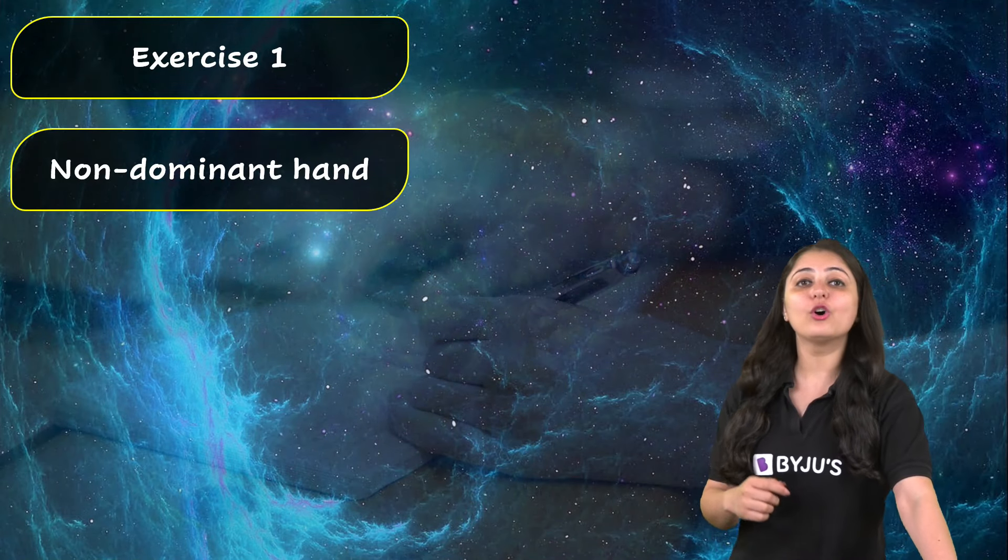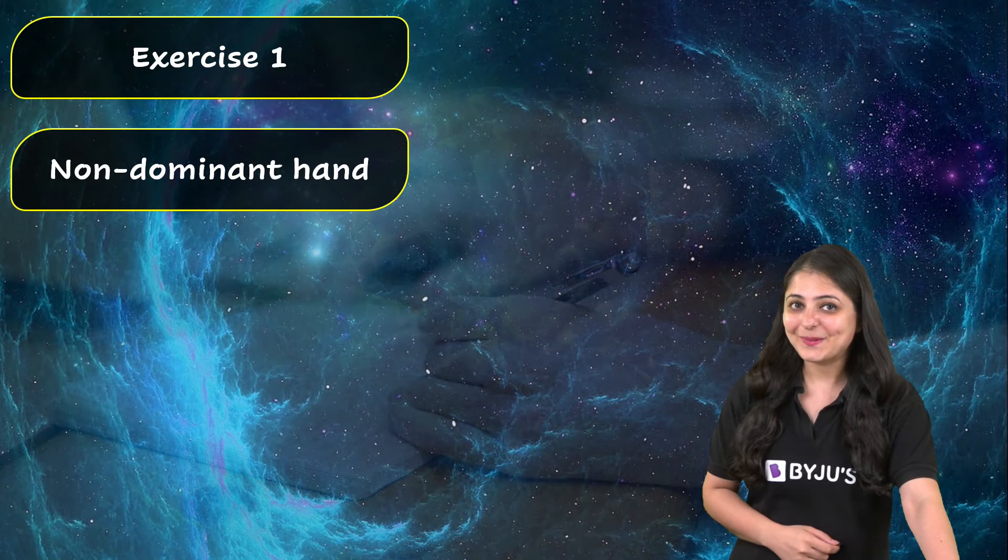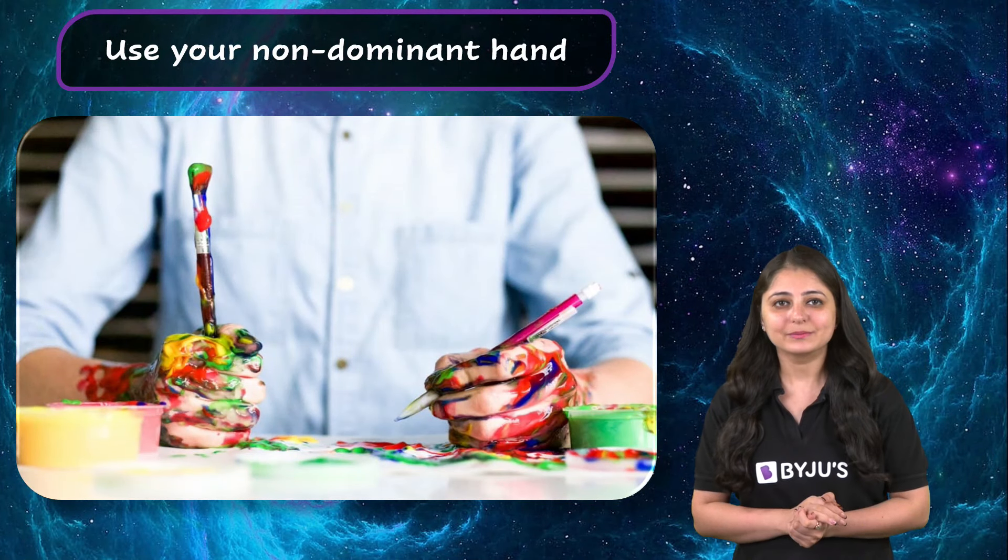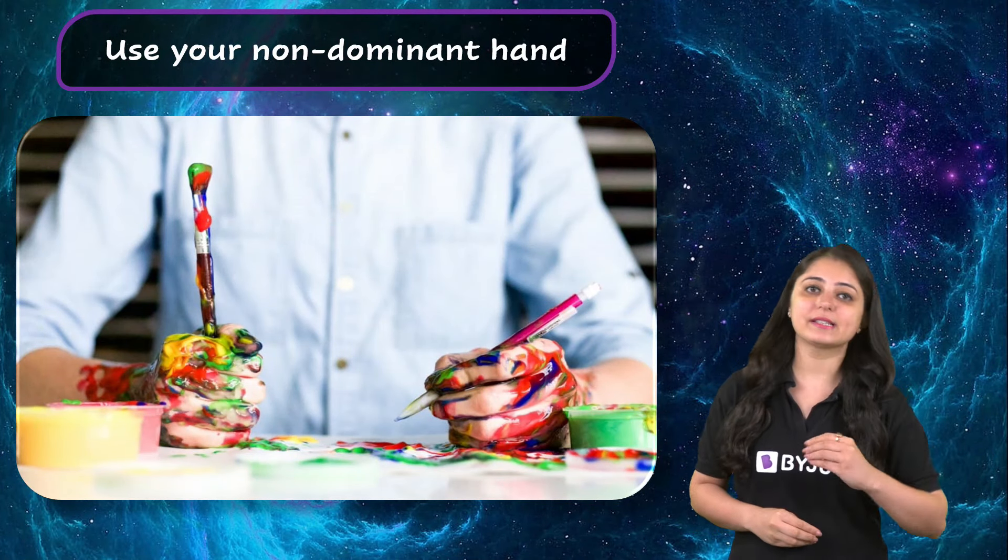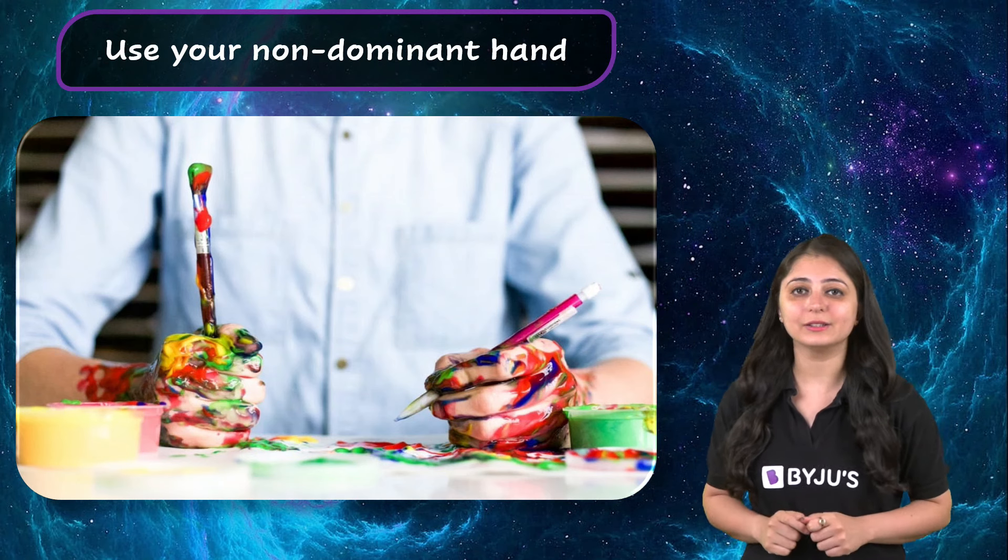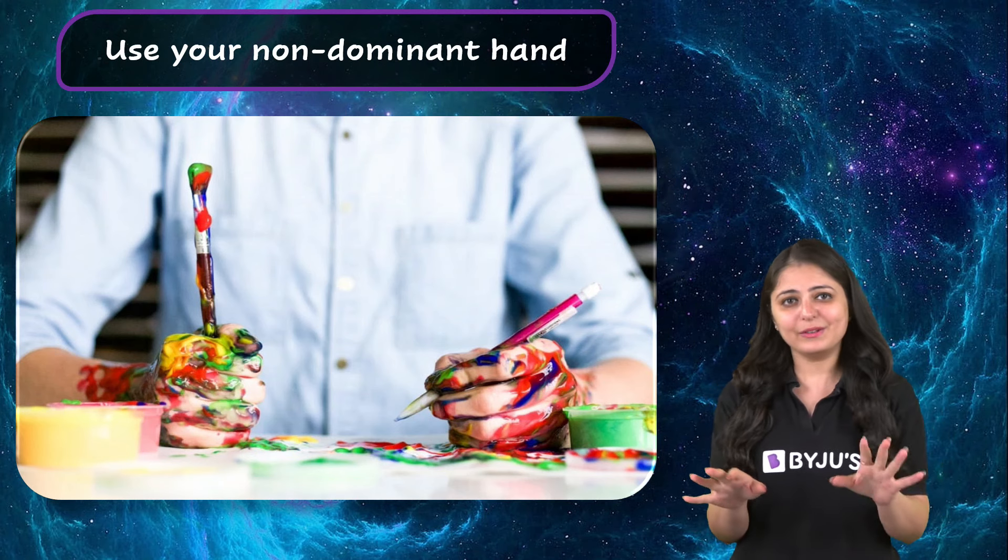Point number one: Non-dominant hand. Dominant hand is the main hand that we use. Some of us are right handers, some of us are left handers. We have our preference for using one hand over the other to perform tasks.